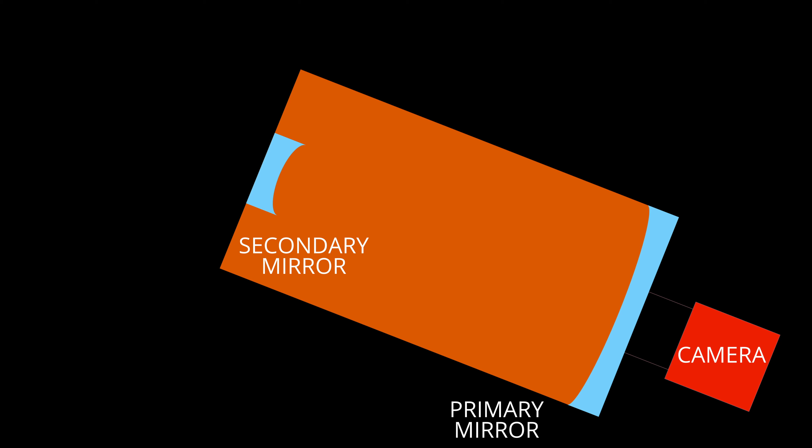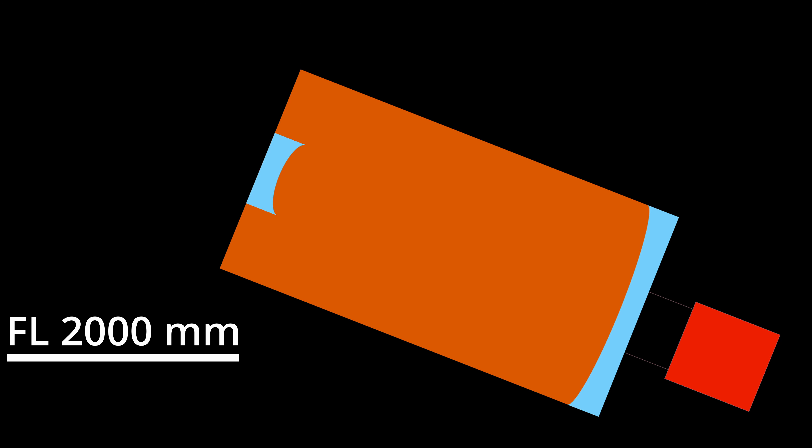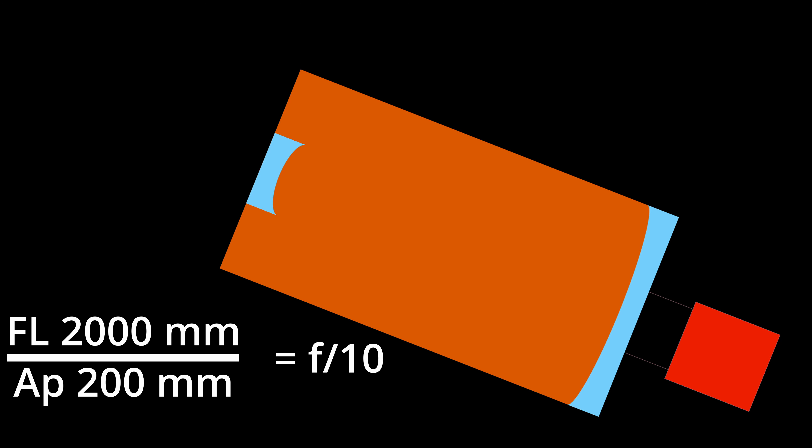Here's a simplified model of the Schmidt-Cassegrain telescope from the previous image. Since about one-half the total length was only a dew shield, I have removed it for simplicity. This SCT has an aperture of 200 millimeters and a focal length of 2,000 millimeters — rounded numbers to keep things simple. That gives the telescope a diameter of 200 millimeters, the circle in which light can enter, and the light travels 2,000 millimeters from the corrector plate back to the sensor. We find the f-ratio by dividing focal length by aperture, giving this SCT a focal ratio of 10.